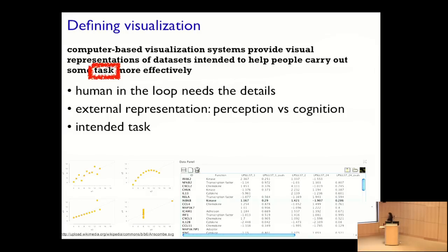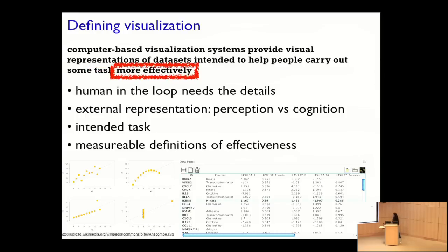Notice there is the word 'task' in the definition — there is some intended task. If all you have is data, that is not enough; you have to know what you are drawing the picture to help people do. That intended task might be explicitly articulated or implicitly assumed. And 'more effectively' means more compared to what? There must be measurable definitions of effectiveness — does it mean faster, easier, more correct, or novel capabilities?